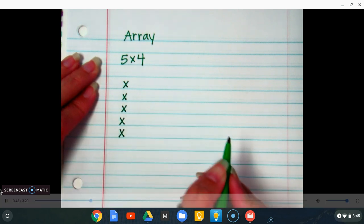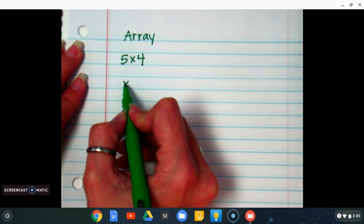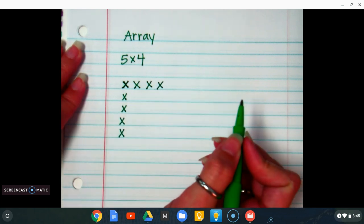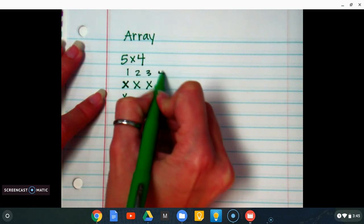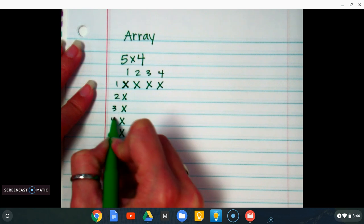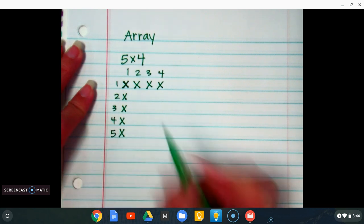The second number tells you how many goes across, so you have to count. This is the first one, so that would be 1, 2, 3, 4. After this, I tell the kids that they need to put their numbers above it just to make sure that they have 4 across and 1, 2, 3, 4, 5 down.